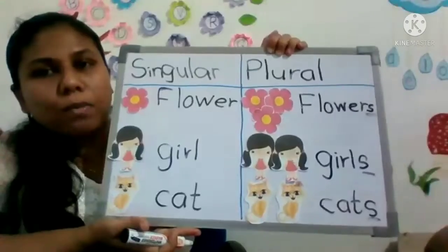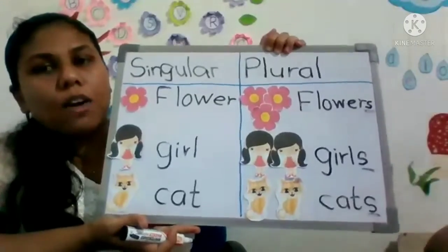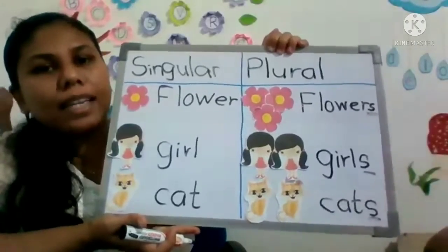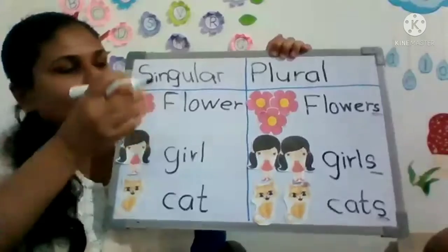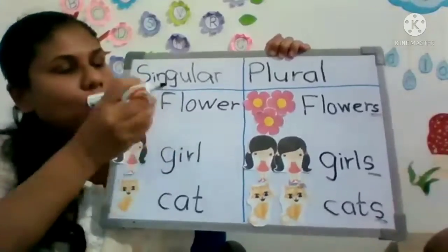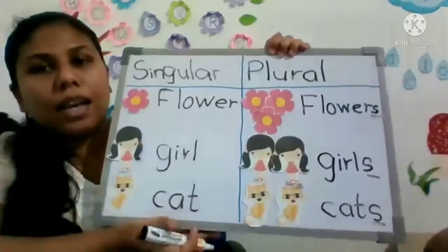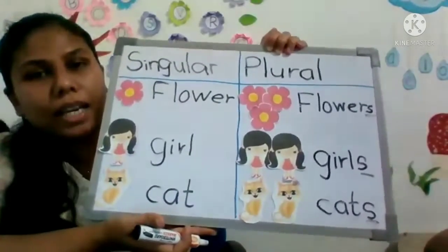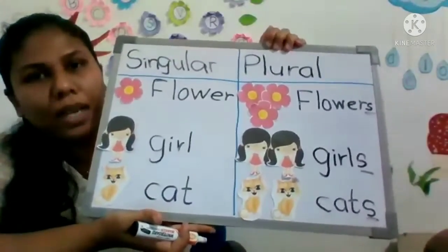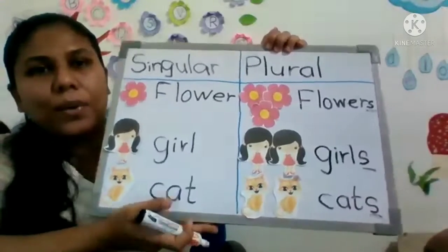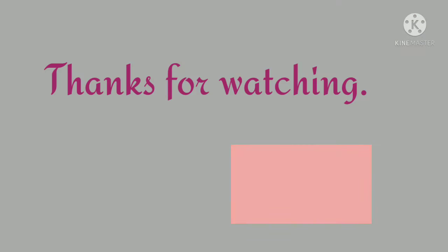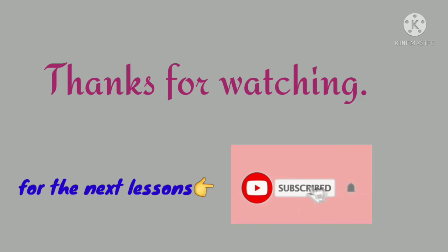Plural forms of most nouns are formed by adding S. Right? Bahu vachana — singular eka thaS eka add karla. Right? That is how we form the plural — bahu vachana.